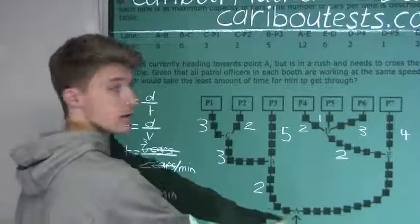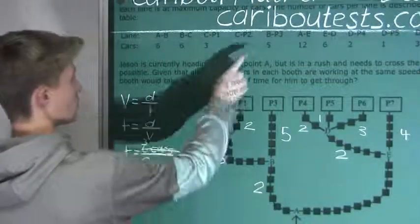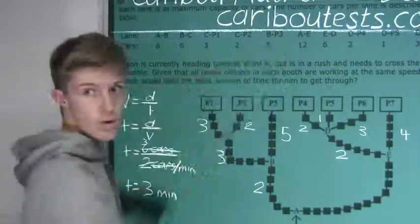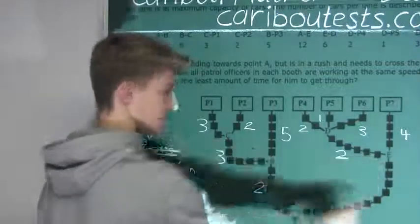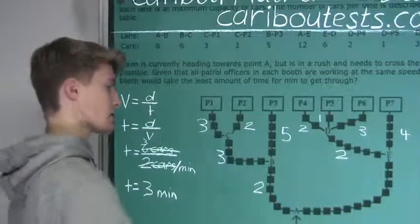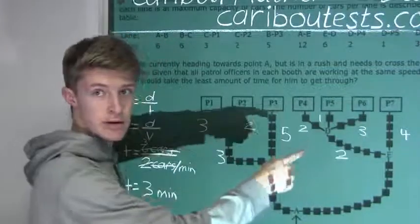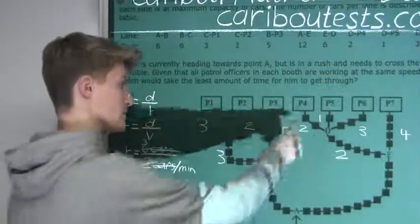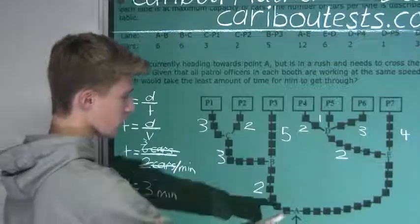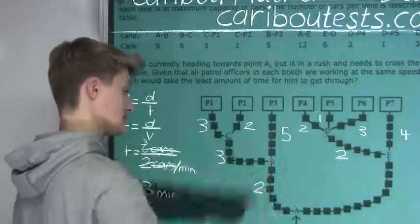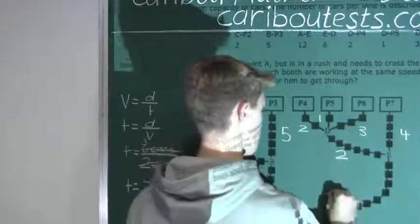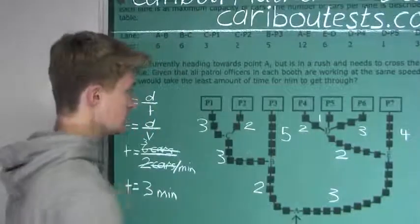And finally, the line of cars from A to E. And we know from up here it says A to E is 12. So the distance is 12 cars. And the velocity is, well, it goes into P4, P5, P6, and P7. So that is four cars per minute because there are four booths. So 12 divided by four is then three. So this is three minutes to get from A to E.